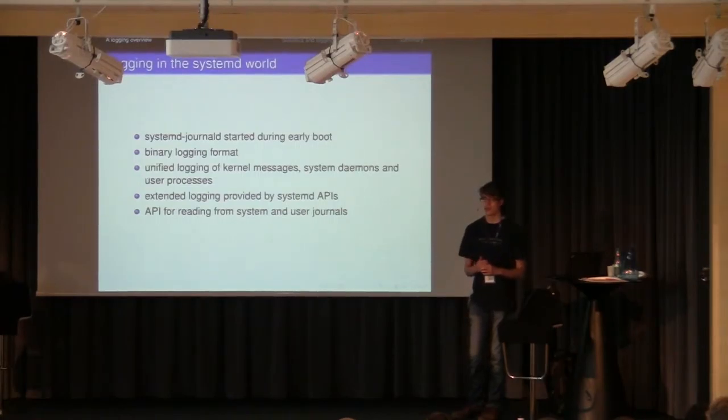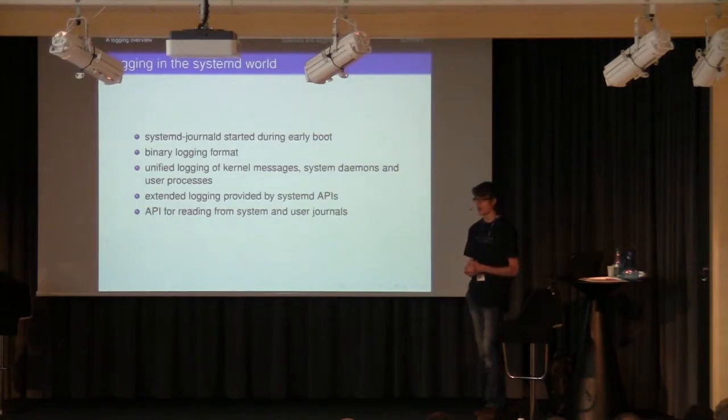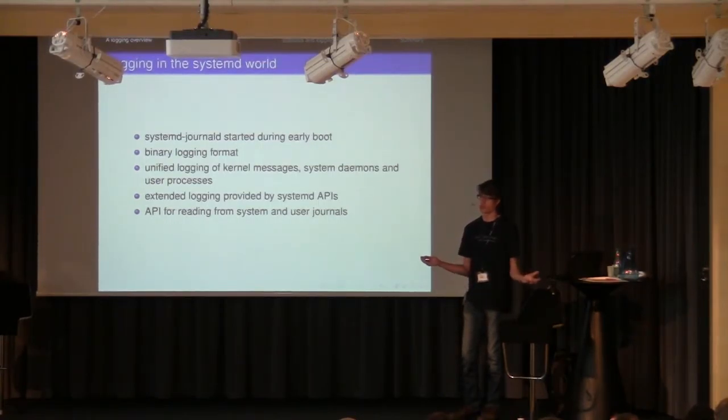With the systemd journal APIs, you can add essentially any arbitrary metadata that you like. If you want to push a binary blob into the journal, you can do that. That doesn't immediately sound useful. But on the other hand, say you have a crash, you want to put a core dump in there, then you can then access that much later on, and you can do some debugging, and it's in your logs directly. You know when it occurred, and in which process it occurred. Very, very useful.